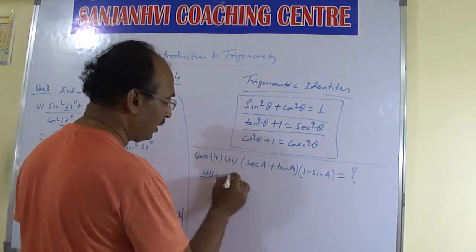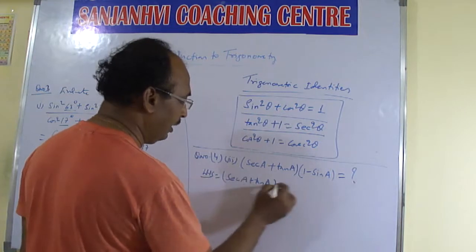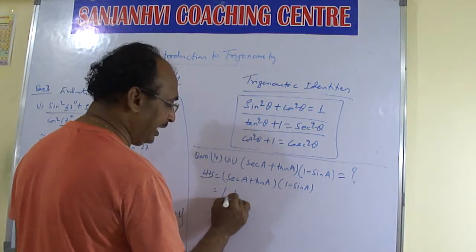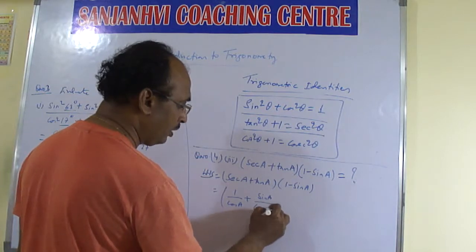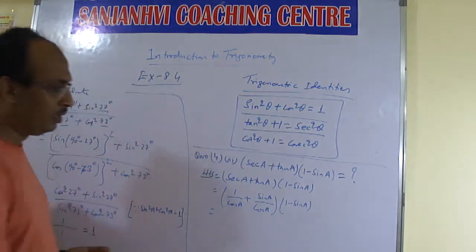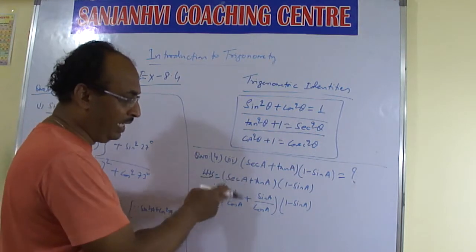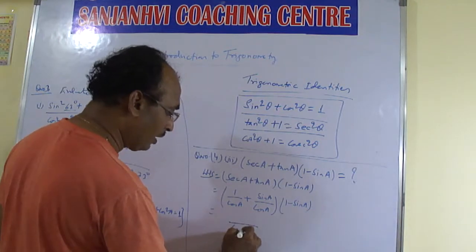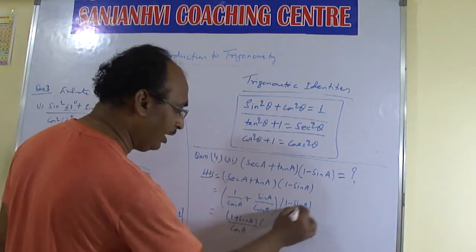LHS: sec a plus tan a, into one minus sin a. We will make it as: sec a is 1 by cos a, and tan a is sin a by cos a, and one minus sin a. We are changing: tan a is equal to sin a by cos a, sec a we are changing to 1 by cos a. Then here one plus sin a, and here one minus sin a.